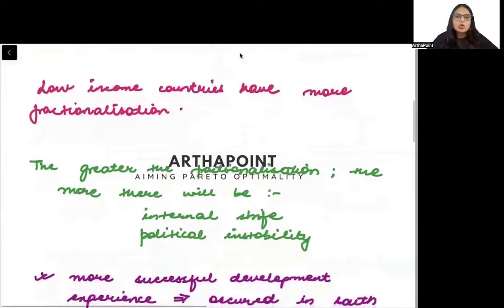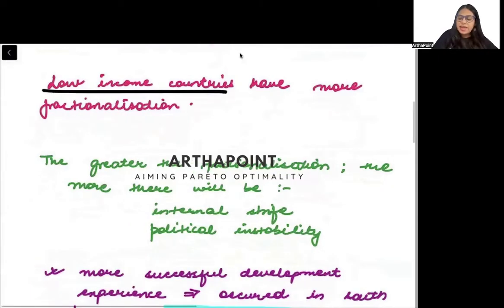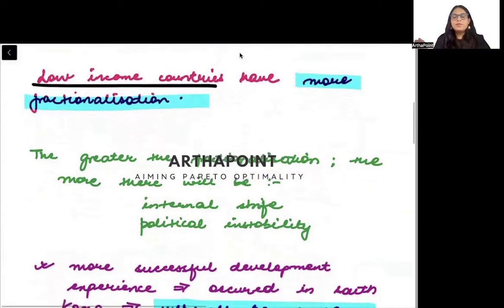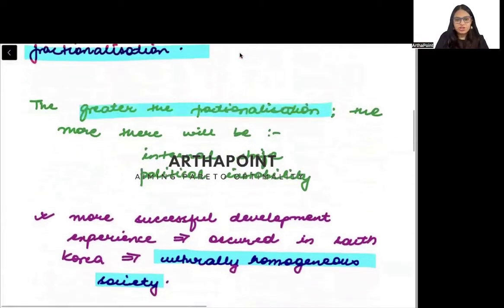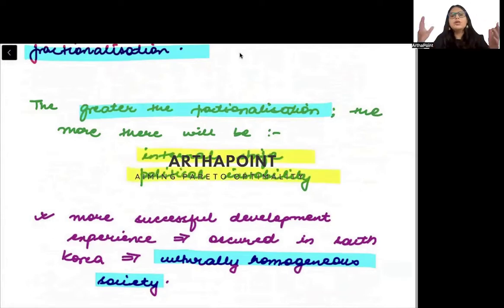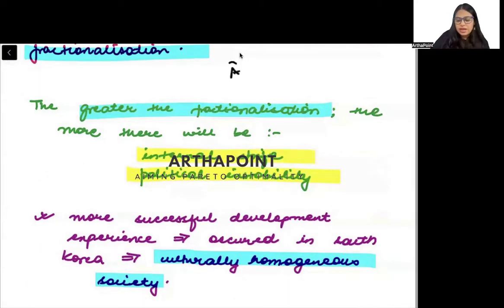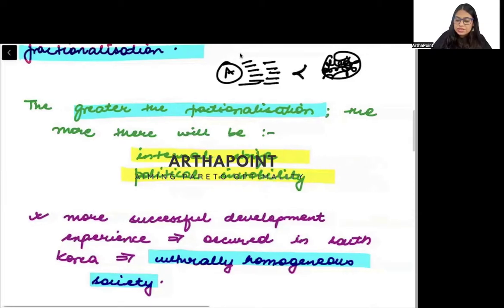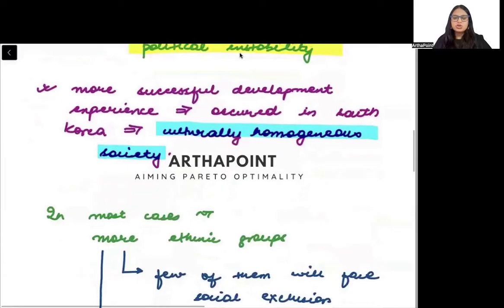It has been seen that low income countries tend to have more fractionalization. It has also been seen that more fractionalization leads to more political instability. Compare two countries: Country A where everyone shares the same religion and caste, and Country B with multiple religions and castes. You will always see more political instabilities in Country B.